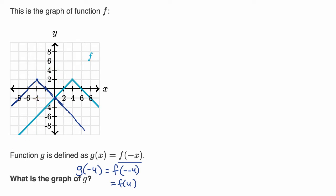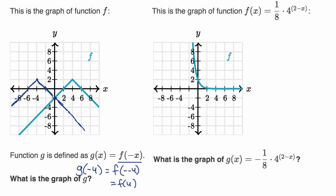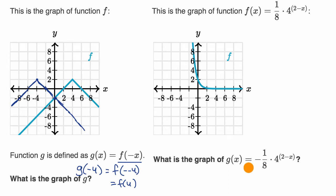Let's do another example. So here, once again, this is the graph of the function f. And then they say, what is the graph of g? So pause this video and try to sketch in your mind what g should look like. In this situation, they didn't replace x with negative x in f of x. Instead, g of x is equal to the negative of all of f of x.